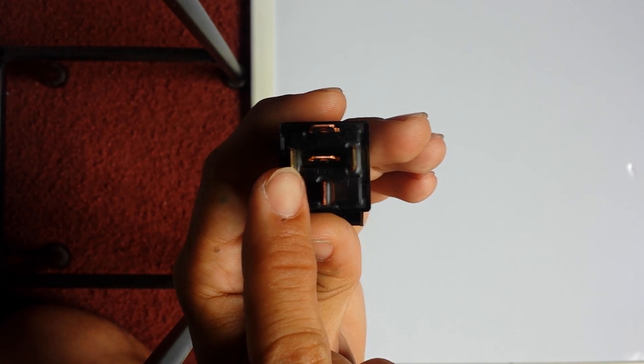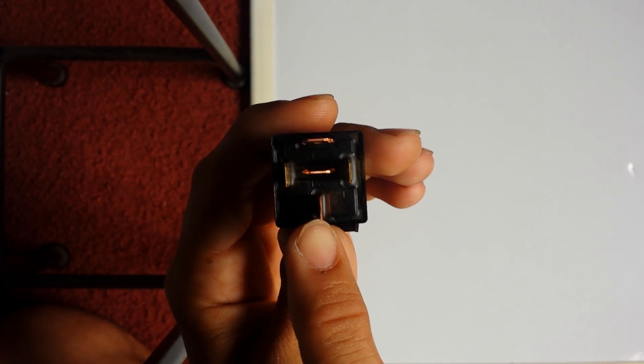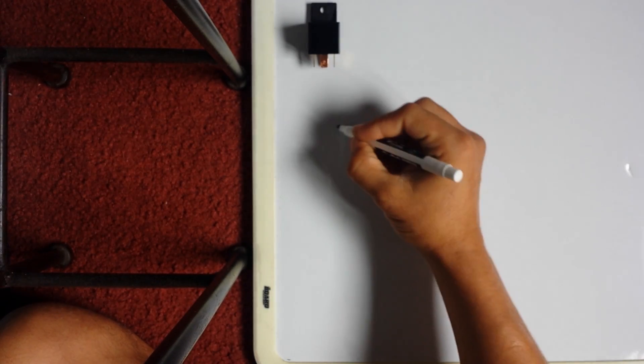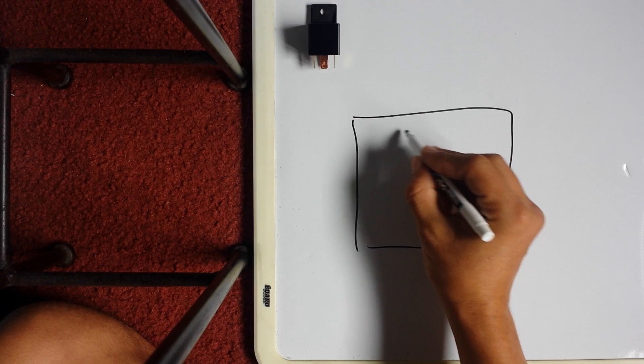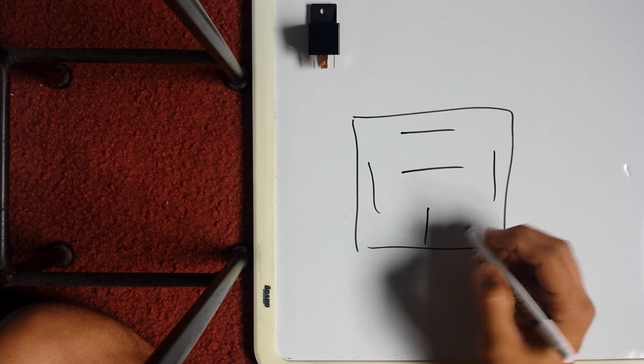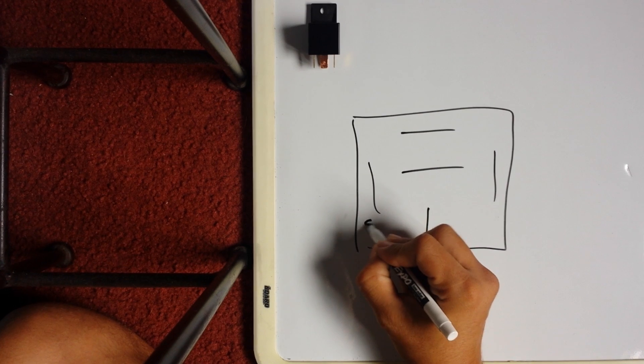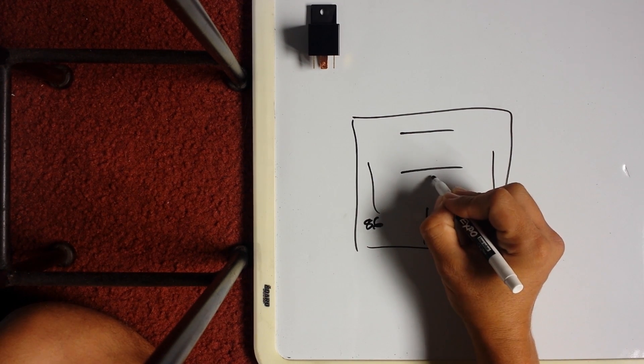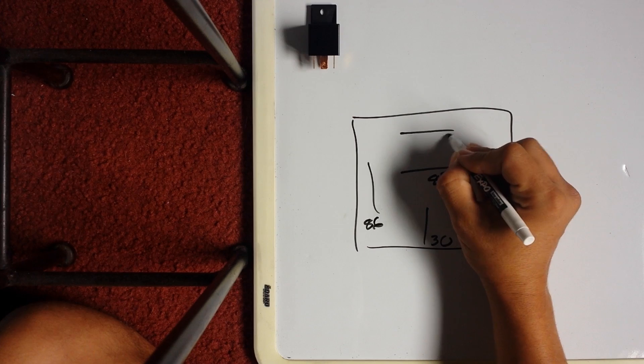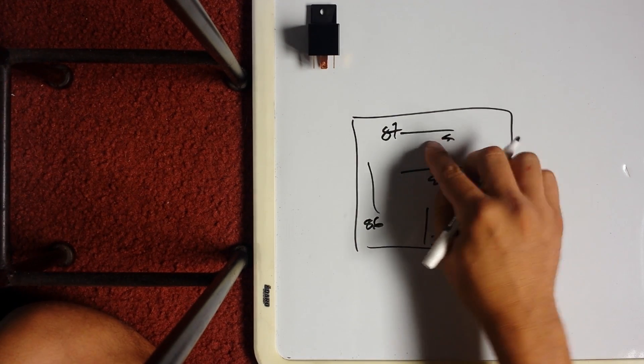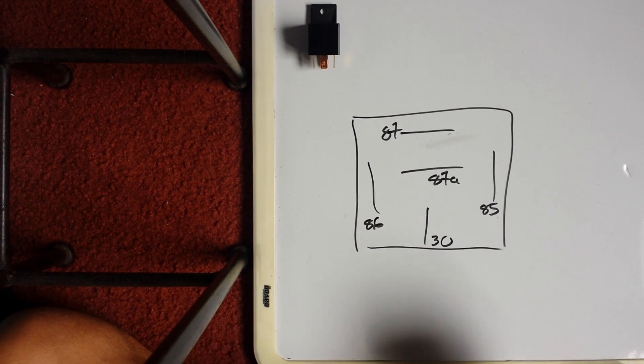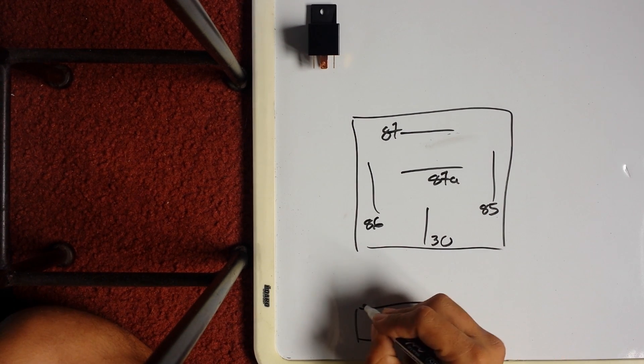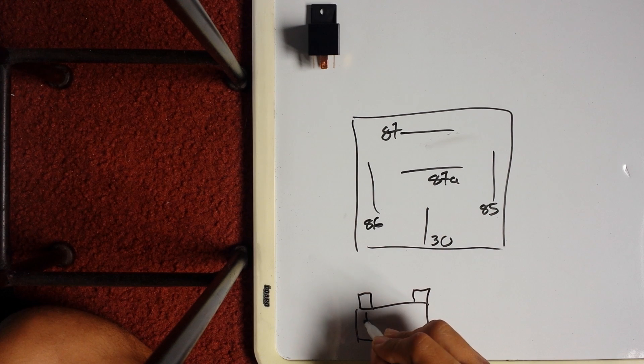So a standard five-wire relay has five terminals: 86, 85, 30, 87, and 87a in the middle. All right, now I'll draw the relay here for you guys. So here's the 30, here's 86, 85, and 87a.